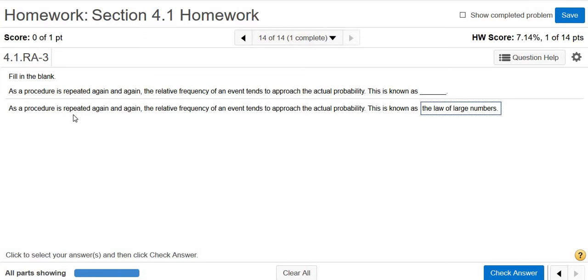And again, it says that as the procedure is repeated again and again, take a simple coin toss, the relative frequency, so your actual results, approach the actual probability. That's called the law of large numbers.